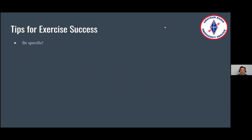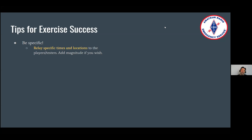A couple of tips for exercise success based on our experience: be specific. Relay specific times and locations to your players and testers. You can add a magnitude if you wish. If you have a group of people that have experienced earthquakes before, maybe tell them it was like a specific earthquake and give them a town — like an earthquake around Pasadena or Pomona. That gives everybody a sense of how far away they are and what they should feel.